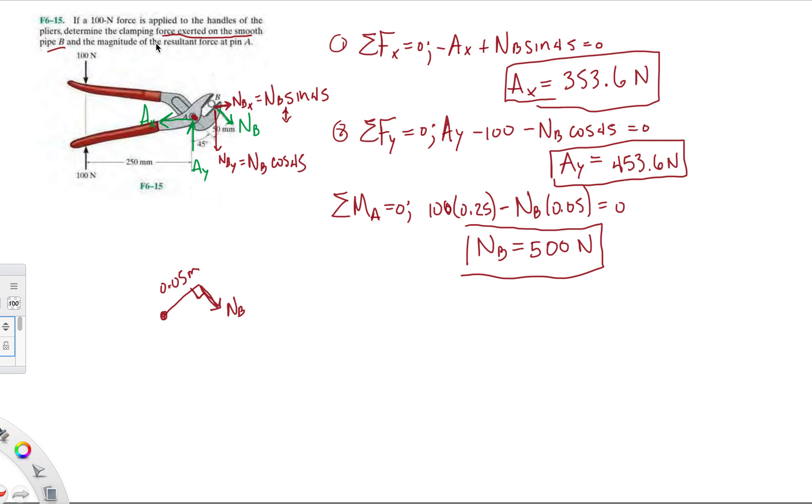They're asking for the magnitude of the resultant force of pin A. To get the magnitude, we do AX squared plus AY squared. When we plug that into the calculator, we end up getting 575.1 newtons for the magnitude.